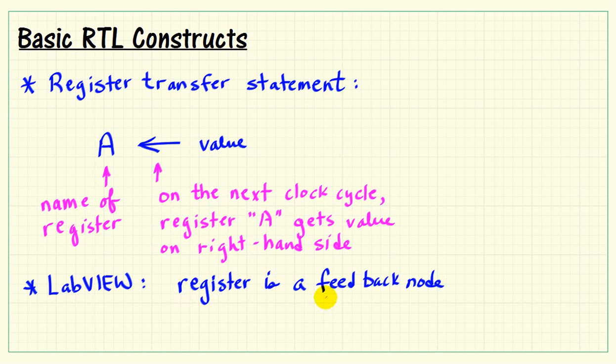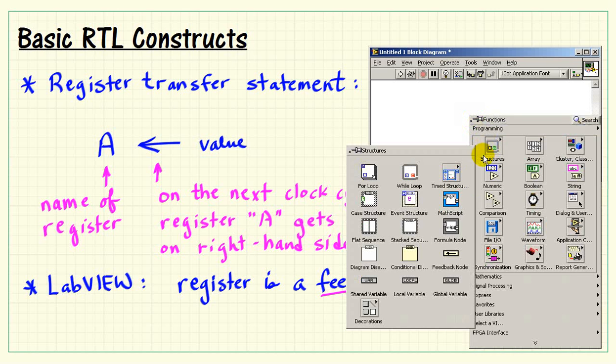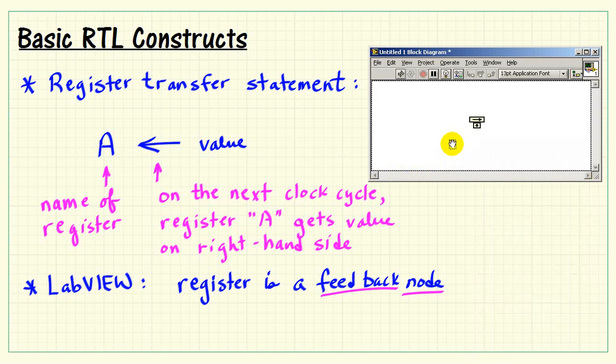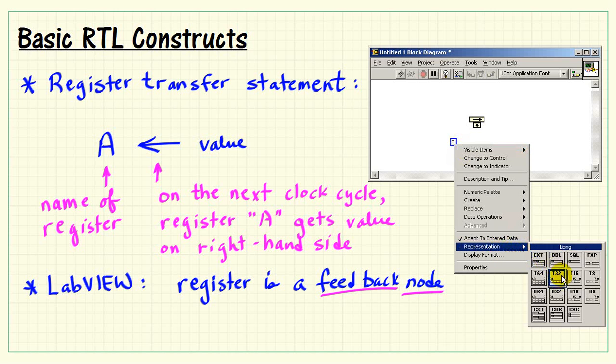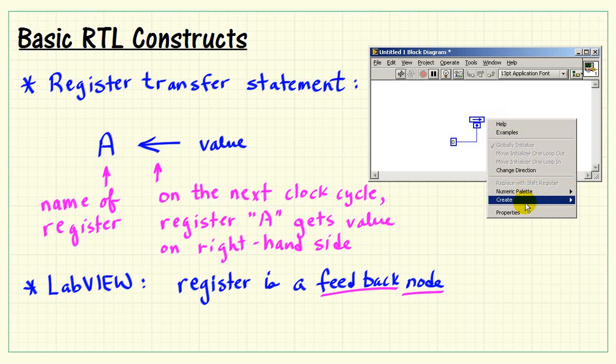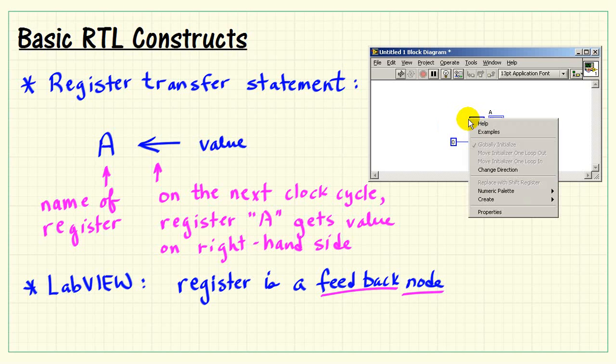Now in LabVIEW, our register is implemented by a feedback node. And we can find the feedback node under the programming palette. And I'll orient this in the other direction so that the input to the register shows up on the left side and the output on the right side. Now it doesn't have any data type yet. So I'll go ahead and initialize this with a constant. And I set the data type of the constant here. And now we see that the register has assumed the color, or the characteristic color, of the integer. Let me create an indicator here. And I'll name the indicator the same as the register contents.